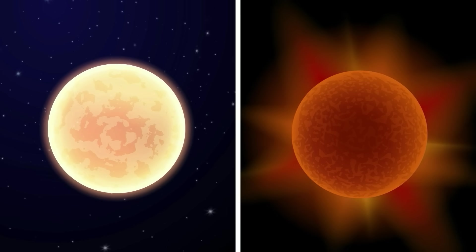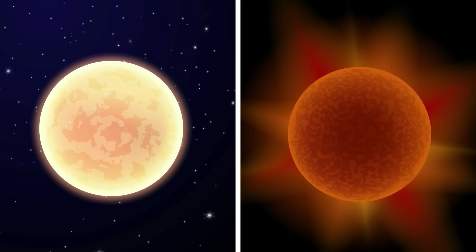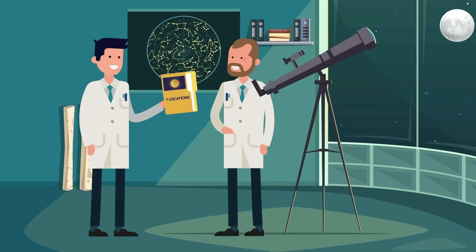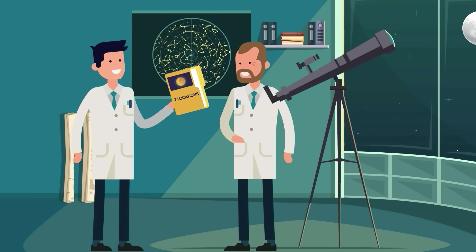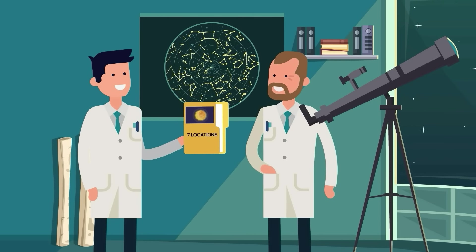While they aren't as big or as powerful as our sun, red dwarfs could sustain life under the right conditions. But these stars aren't easy to see, so this makes following up on them more difficult. But now that we have 7 locations, the process of zeroing in on them begins.